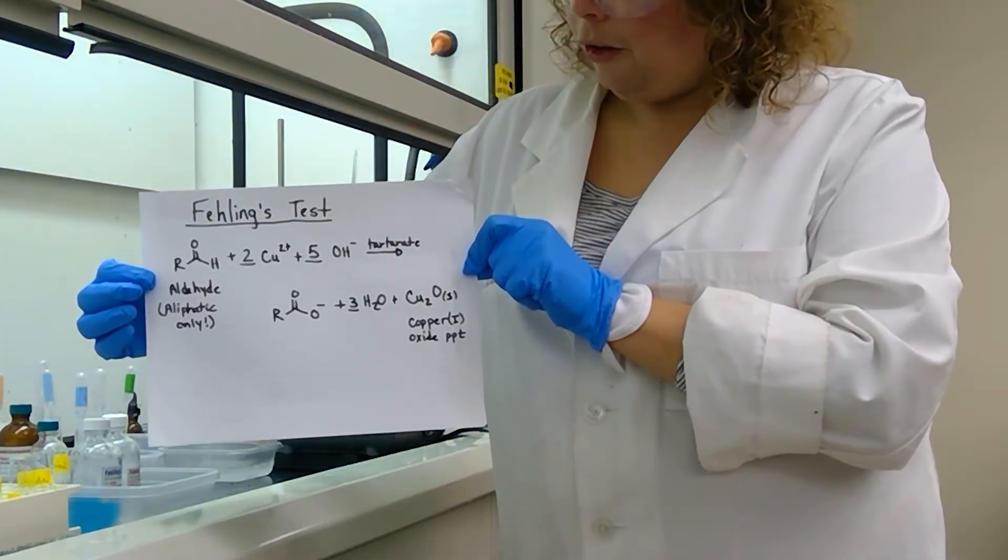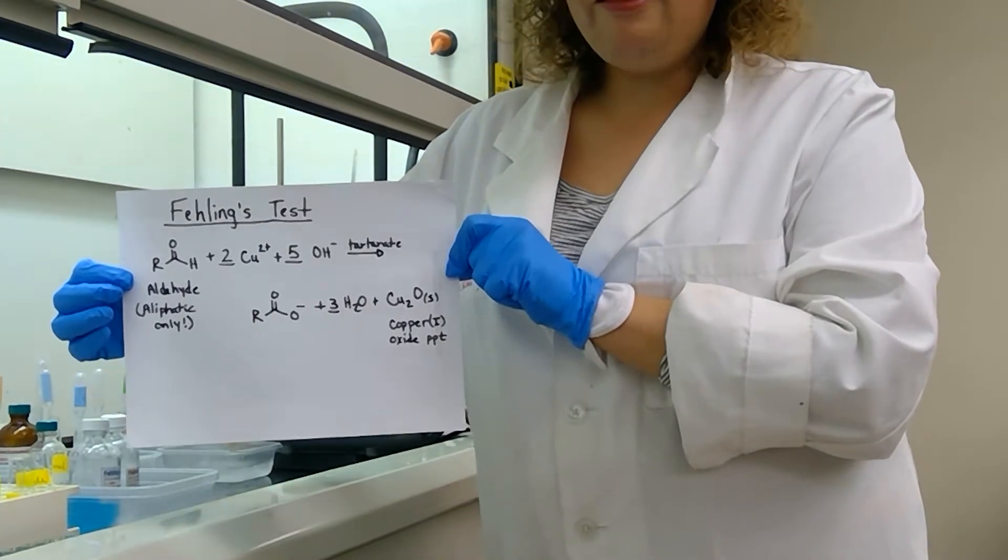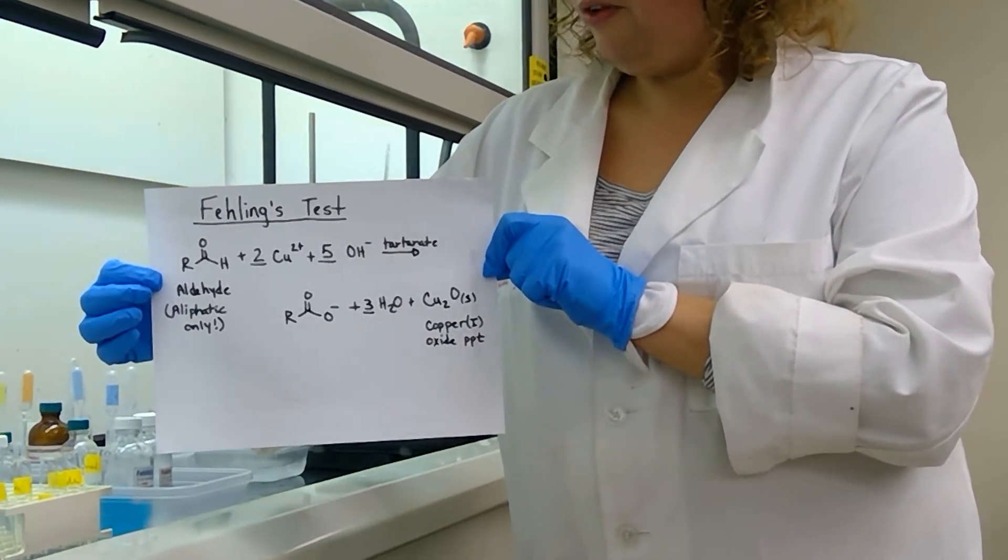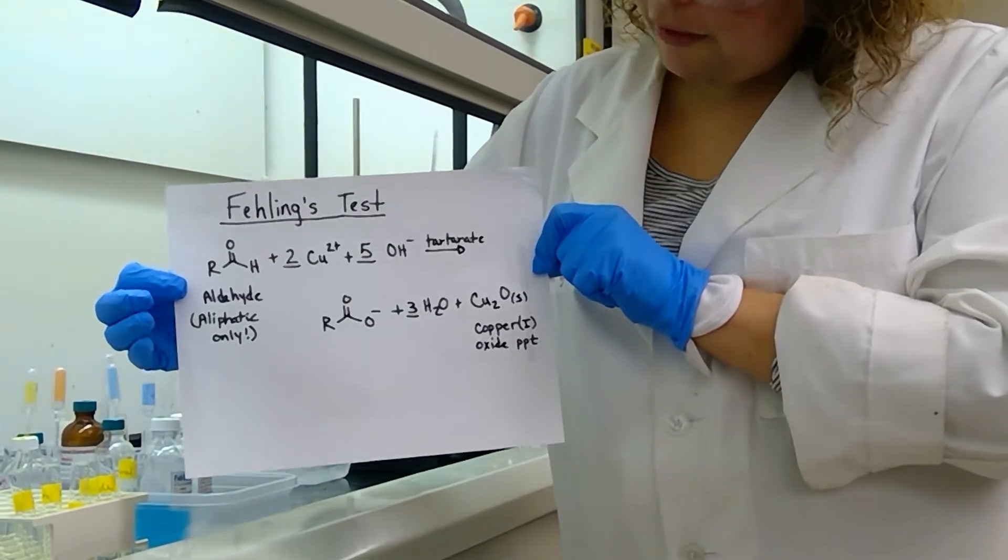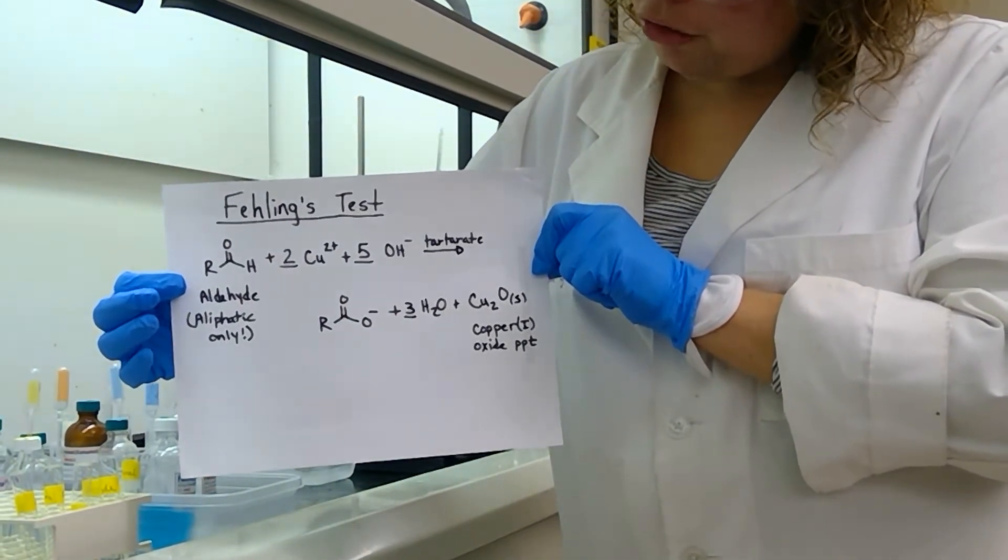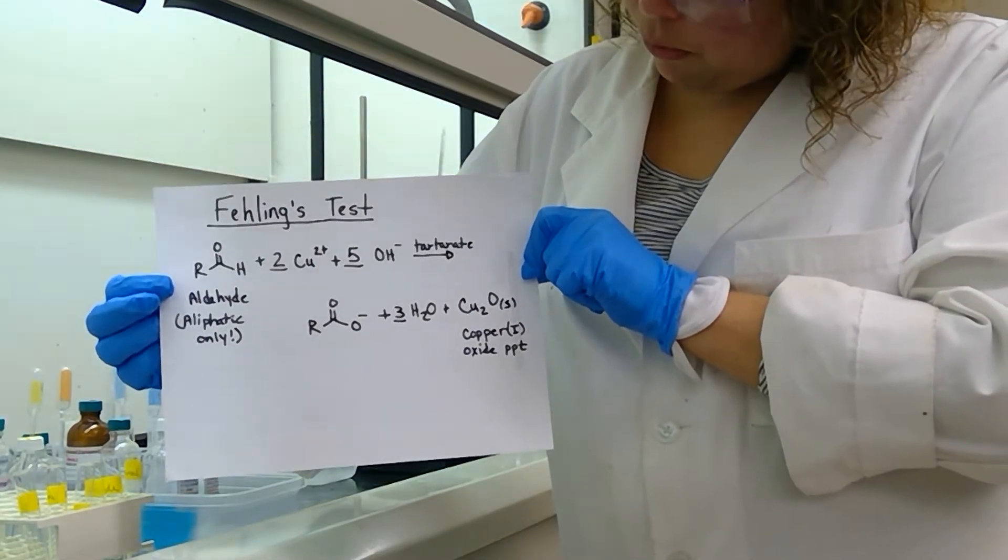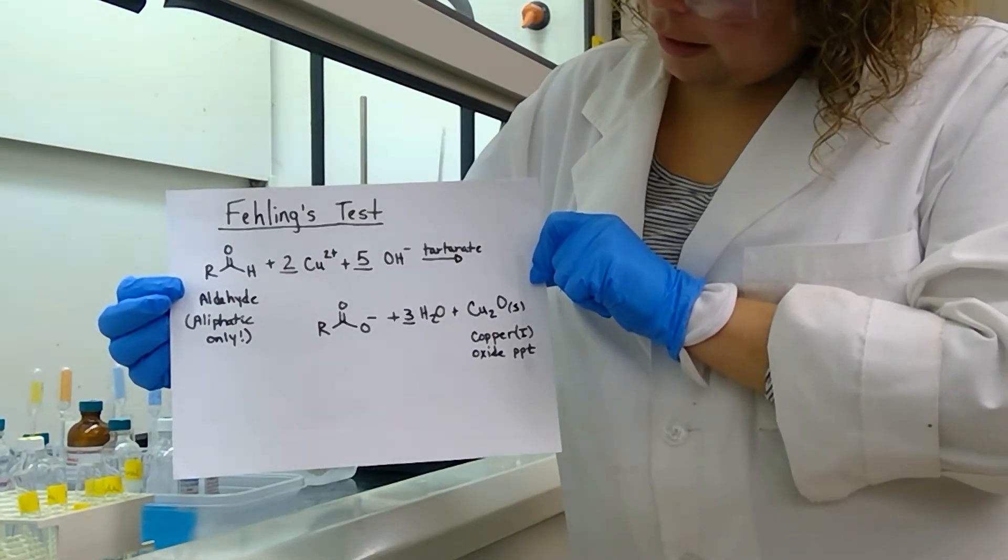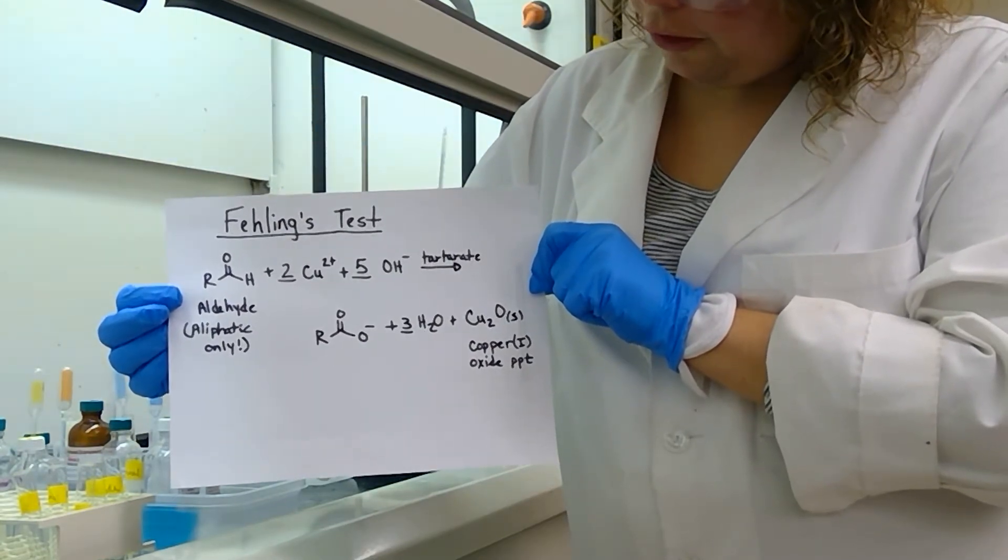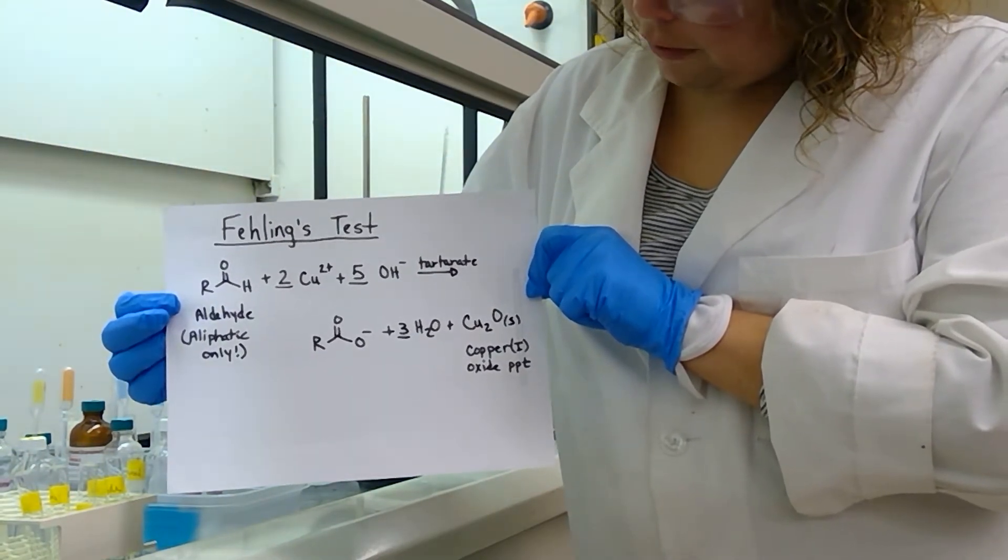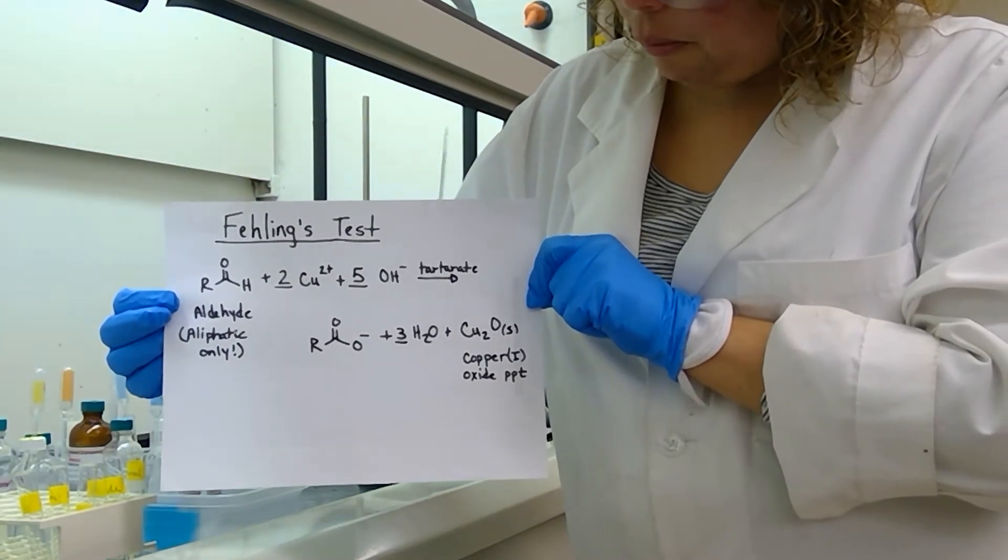For our continuation of Experiment 20, we are now moving on to the Fehling test. The Fehling test is also a test for aldehydes, but in particular aliphatic aldehydes, which means that our R group here would be a long chain of carbons with no benzene rings. What we're reacting with here is a copper ion, some hydroxide solution, and tartrate. If we are successful, we should generate a carboxylate along with a copper oxide precipitate.